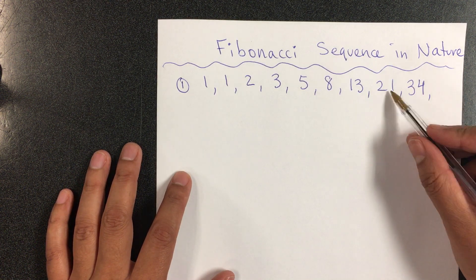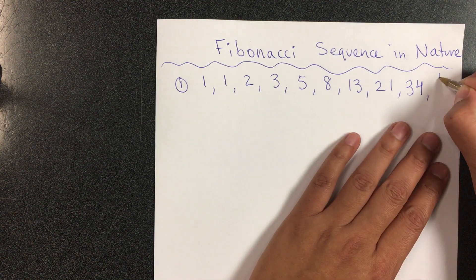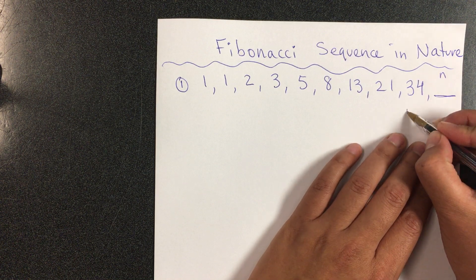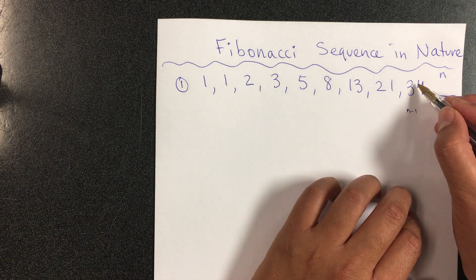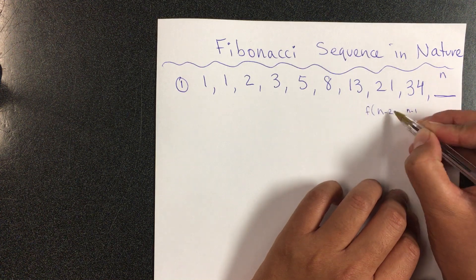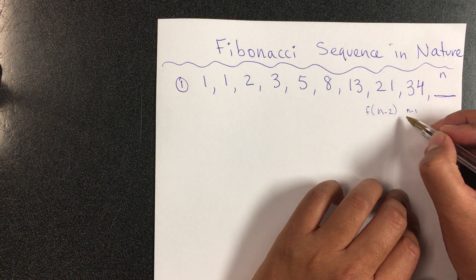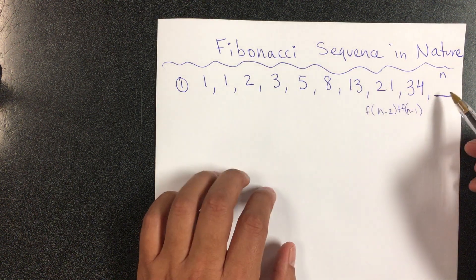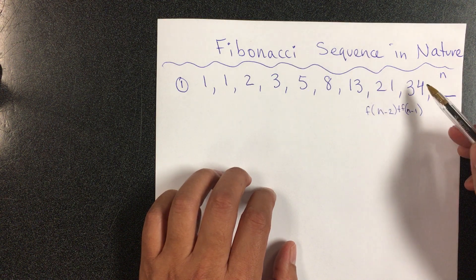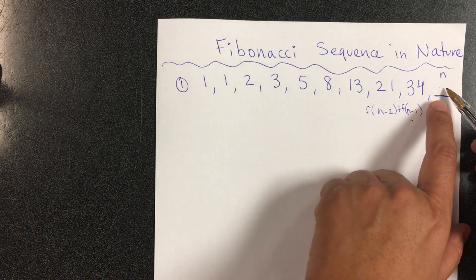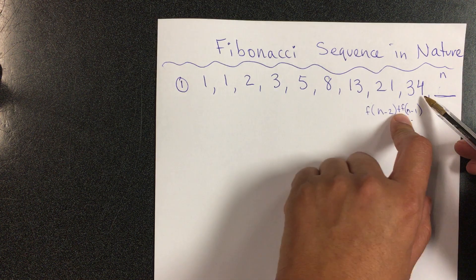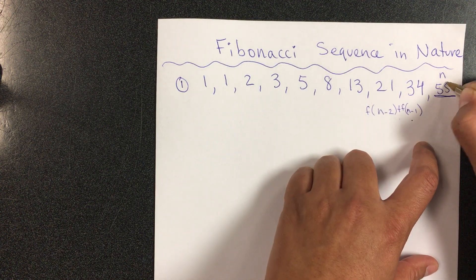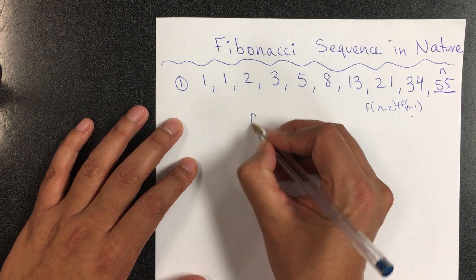So if I needed to find the next one, I could just add the previous two. Let's say I'm looking at term n — I need to look at the previous one, meaning n minus 1, and the one before that, which is n minus 2. What do I do with these two numbers? I add them. So f of n minus 1 is 34, f of n minus 2 is 21, and 21 plus 34 is 55.